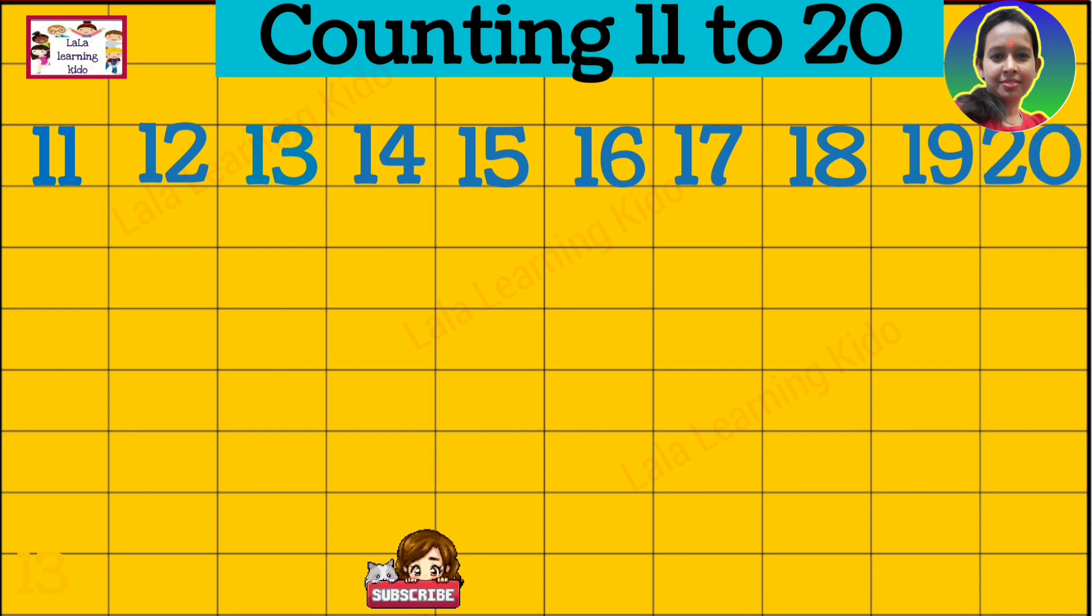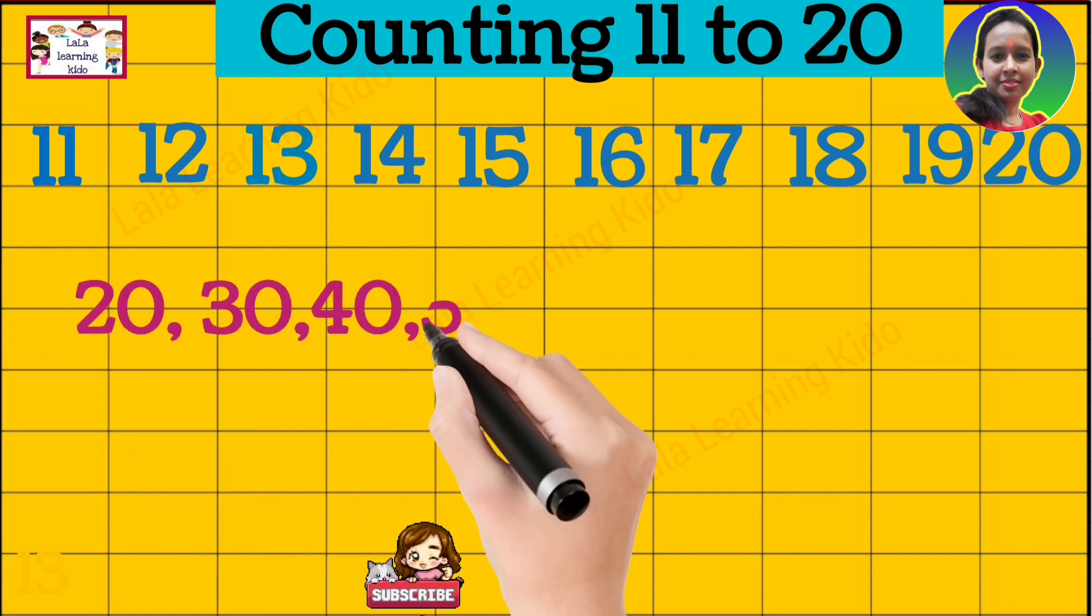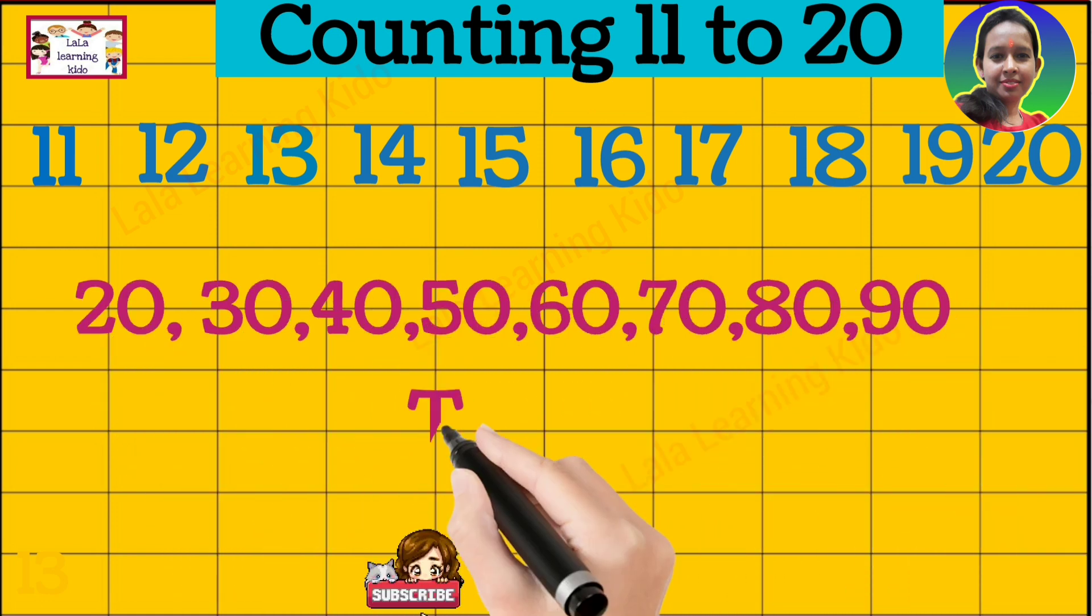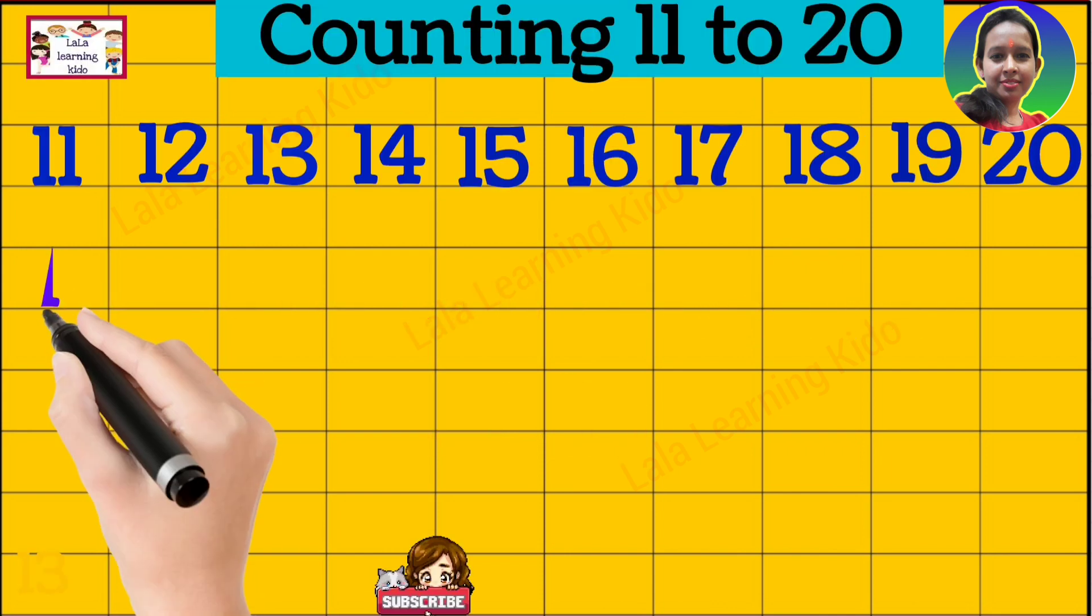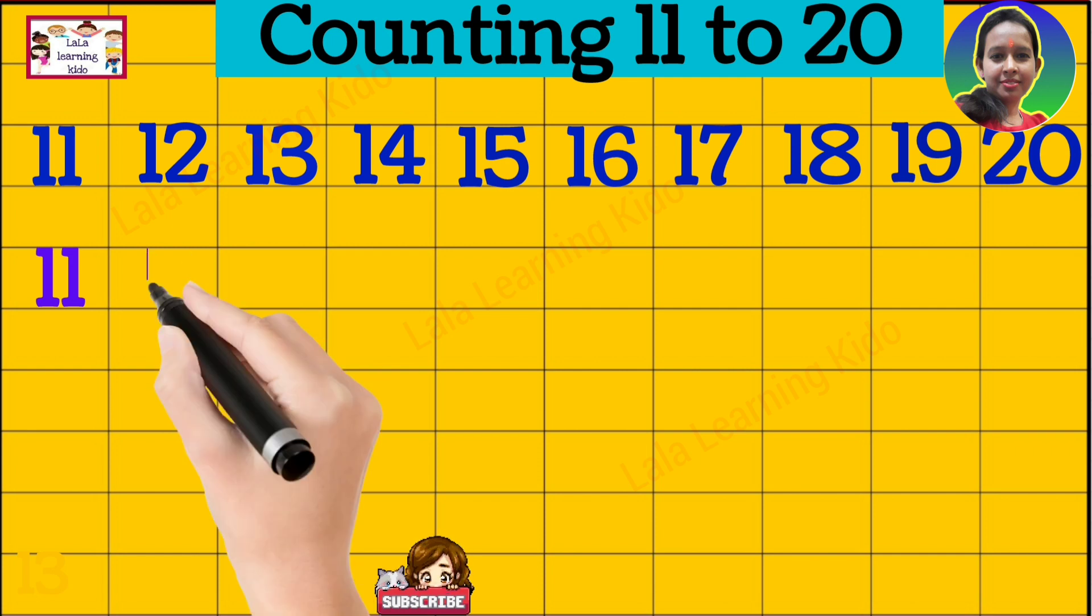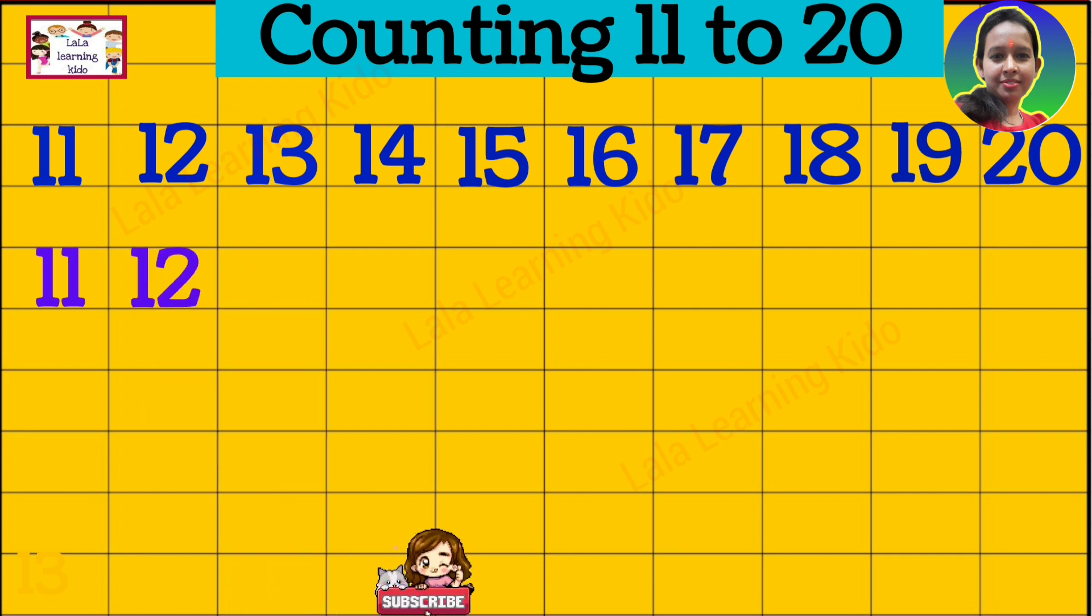2-0-20, 2-0-20, 2-0-20 tak, 9-0-90 tak. T-T-T, T ka saath, T-4 Tiger ka saath aana jaayenge. 1-1-11, 1-1-11, 1-2-12.